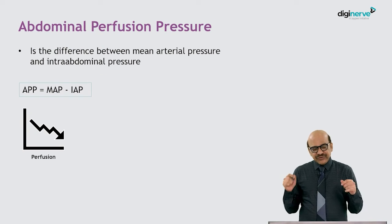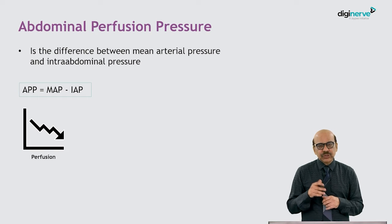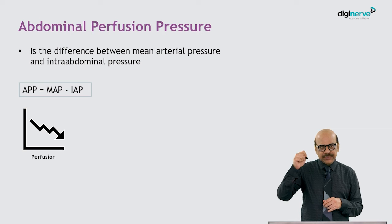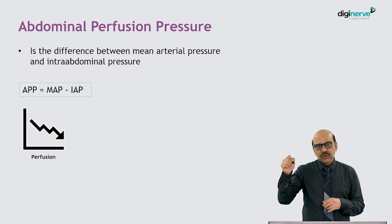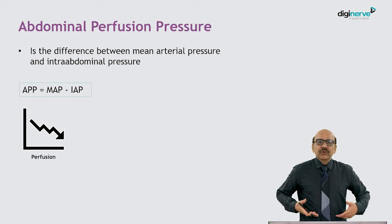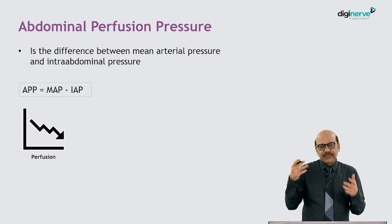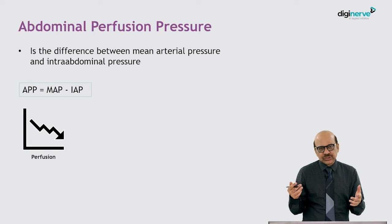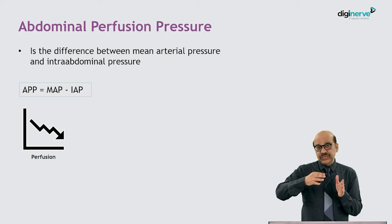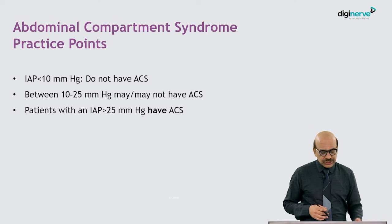The abdominal perfusion pressure equals mean arterial pressure minus intra-abdominal pressure. As intra-abdominal pressure increases with the onset of abdominal hypertension or abdominal compartment syndrome, the perfusion of the intra-abdominal viscera gradually goes down.